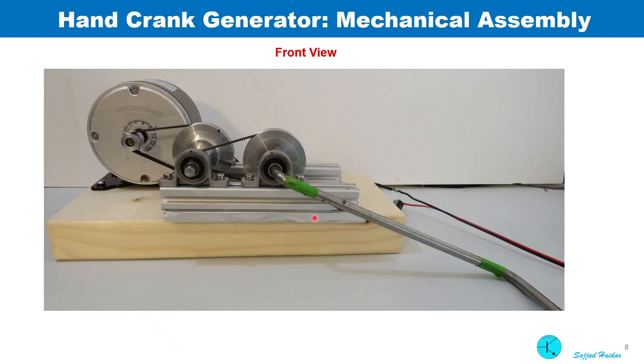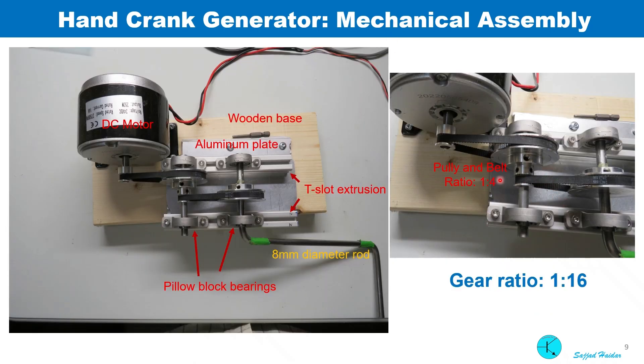This is the front view of the hand crank generator. The two belt pulley system gives me a speed ratio of 1 to 16. That means if I make one rotation, the motor shaft will rotate 16 times.